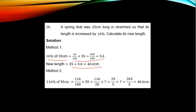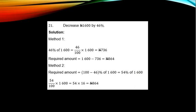Example 21: Decrease 1,600 by 46%. What this means is that you have to find 46% of 1,600 first, then subtract it, that is decrease, remove it from 1,600.